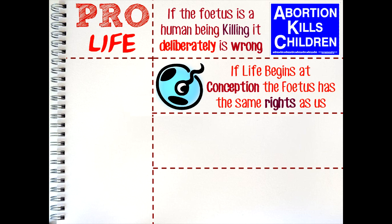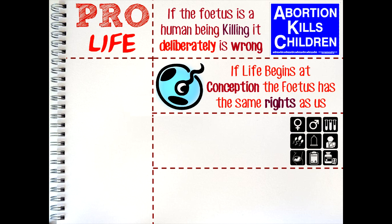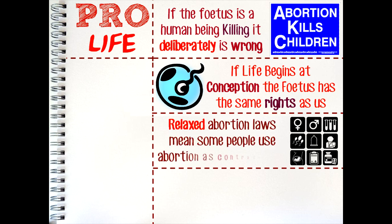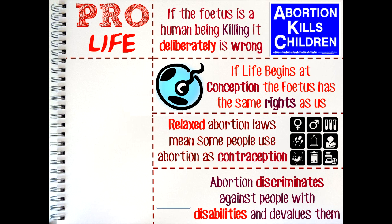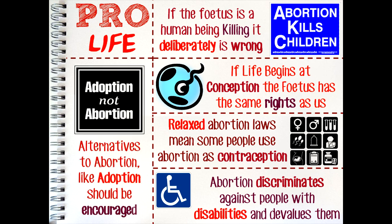Many pro-life supporters argue that relaxed abortion laws allow too many people to use abortion as a form of late contraception. They argue that society should be encouraging people to be more responsible in their choices regarding sexual behaviour, rather than relying on abortion to deal with unwanted pregnancies. Also, some people believe that current laws allowing abortion in the case of fetal abnormality are effectively discriminatory against people with disabilities, and that they devalue the lives of those living with disabilities. Finally, there are alternatives such as adoption that would be better solutions for a pregnant woman who cannot look after her child.